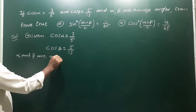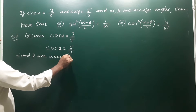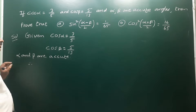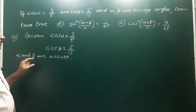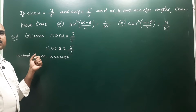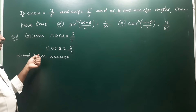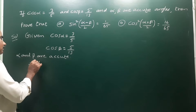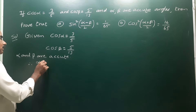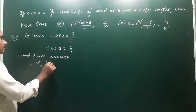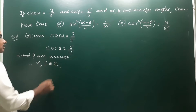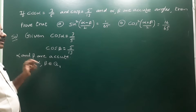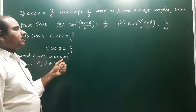Given that α and β are acute angles, they lie between 0 and 90 degrees, which means they belong to the first quadrant. Therefore, α and β both belong to Q1.